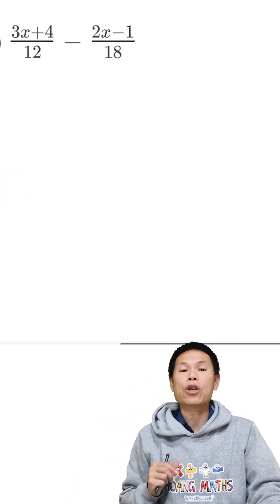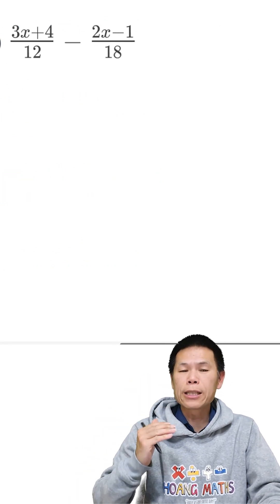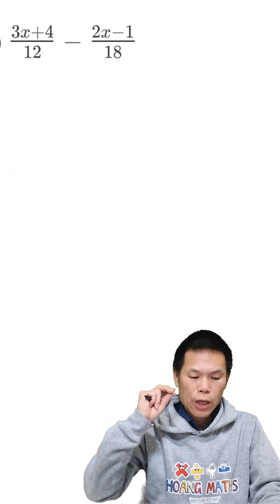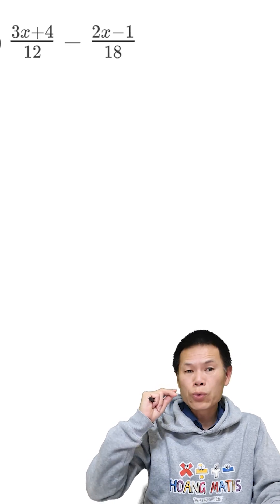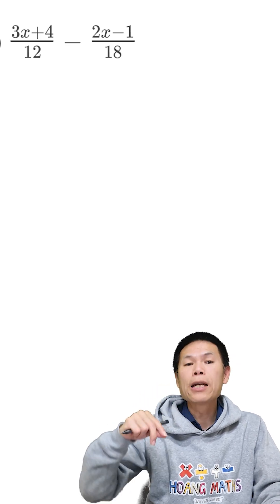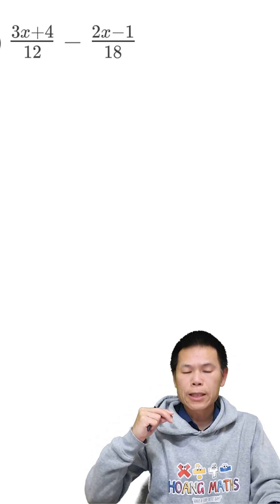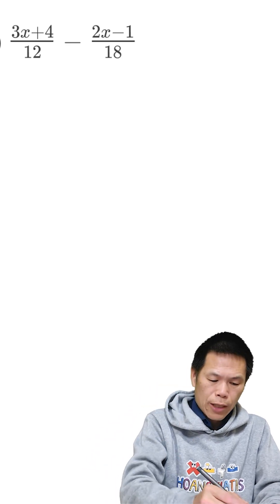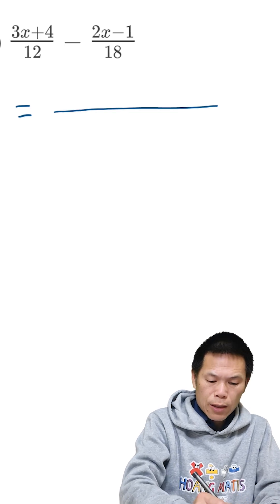So the lowest common denominator is 36, because 18 times 2 is 36, and 4 times 3 is 36. So that is equal to 36.